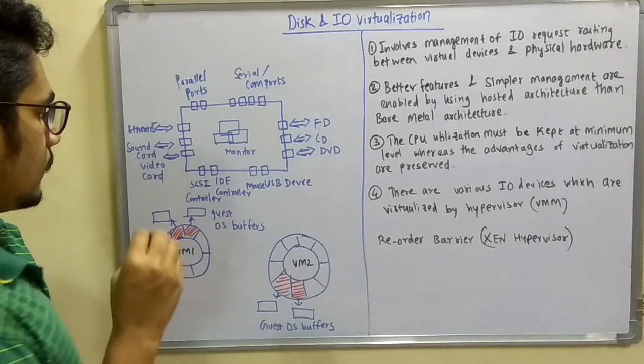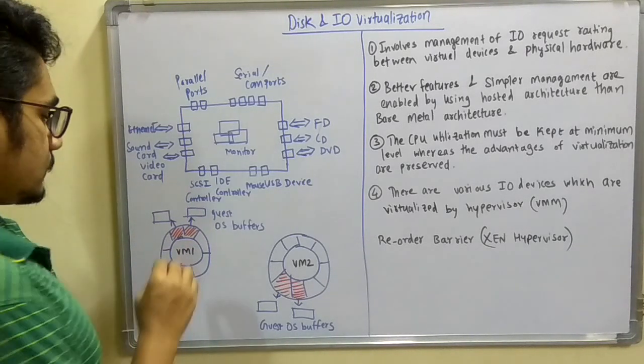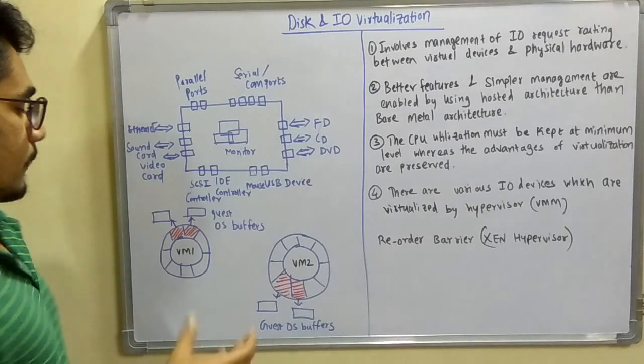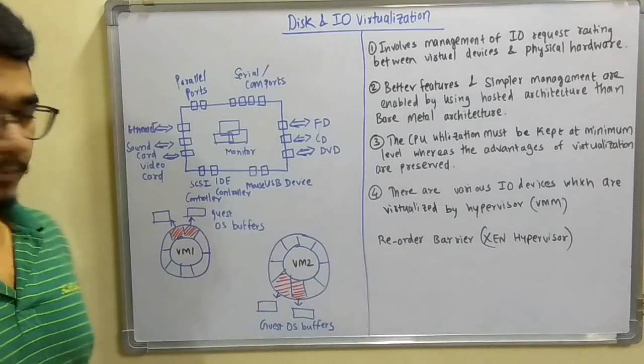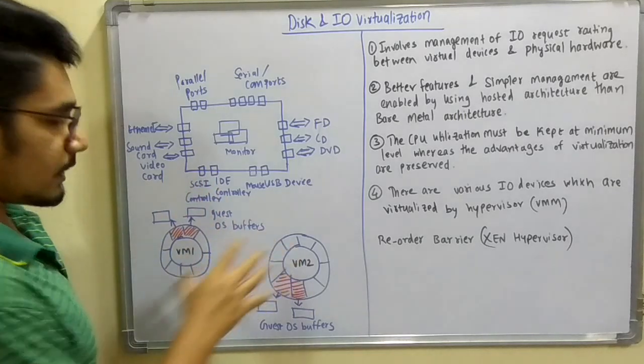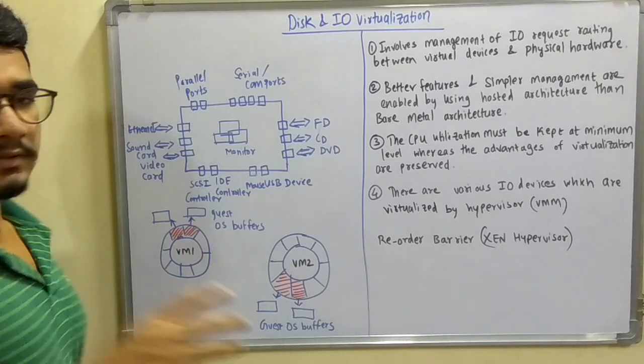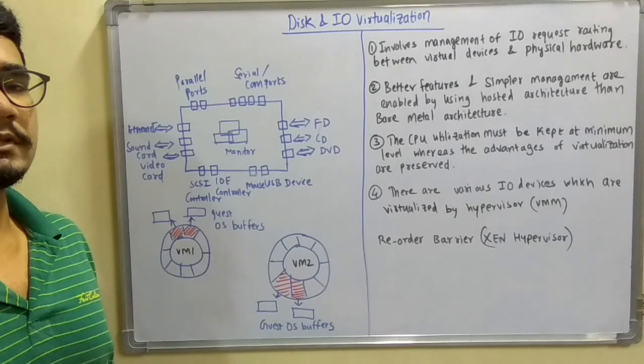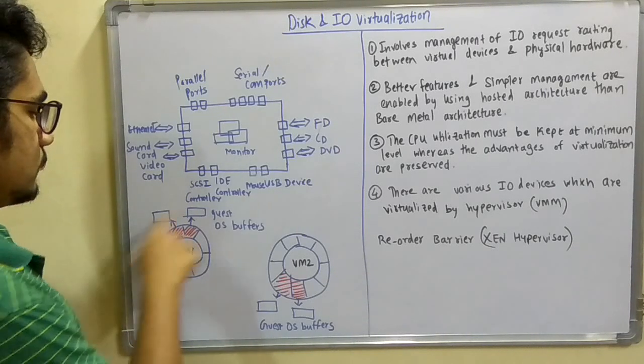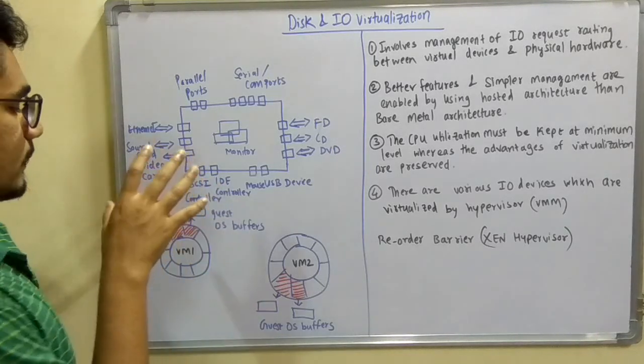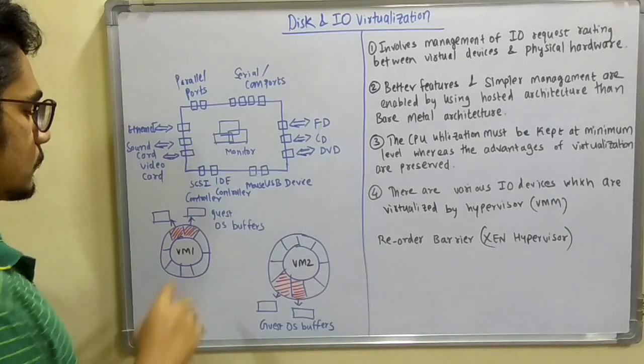Now let's talk about how these devices or requests and responses are done over the VM machine. Consider there are two different VM machines. In previous diagrams I discussed protection rings - ring zero, ring one, ring two, ring three. This may be considered as a protection ring for the I/O or for the disk.